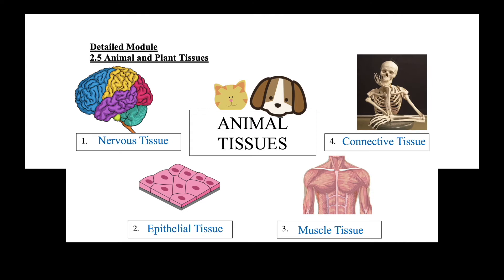Let's begin by learning about the nervous tissue. The nervous tissue is responsible for receiving, processing, and transmitting impulses in the body. There are two types of cells that make up the nervous tissue. Firstly, the glial cells. The glial cells support, nourish, protect, and remove products of metabolism from neurons.